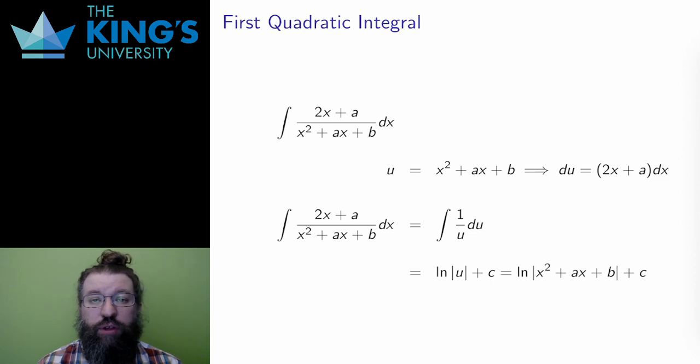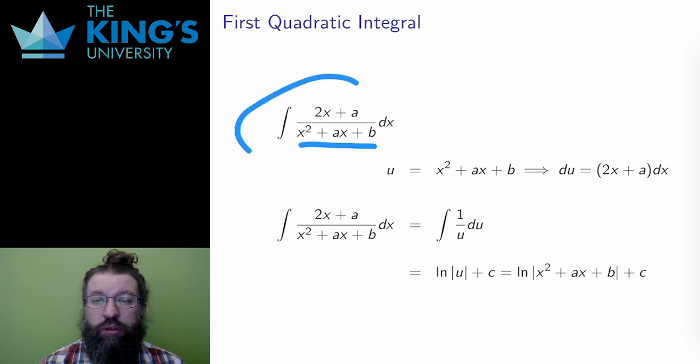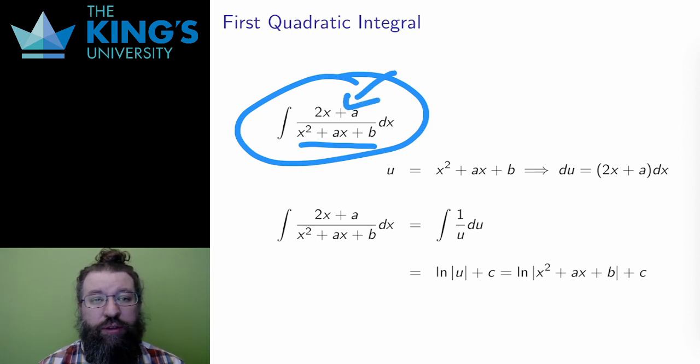The previous two integrals covered all possible powers of linear polynomials in the denominator of a function. Now I want to consider quadratics in the denominator. And I'm going to do two different integrals of this type. First, I want an integral where I have a quadratic x squared plus ax plus b in the denominator, and I have exactly 2x plus a in the numerator.